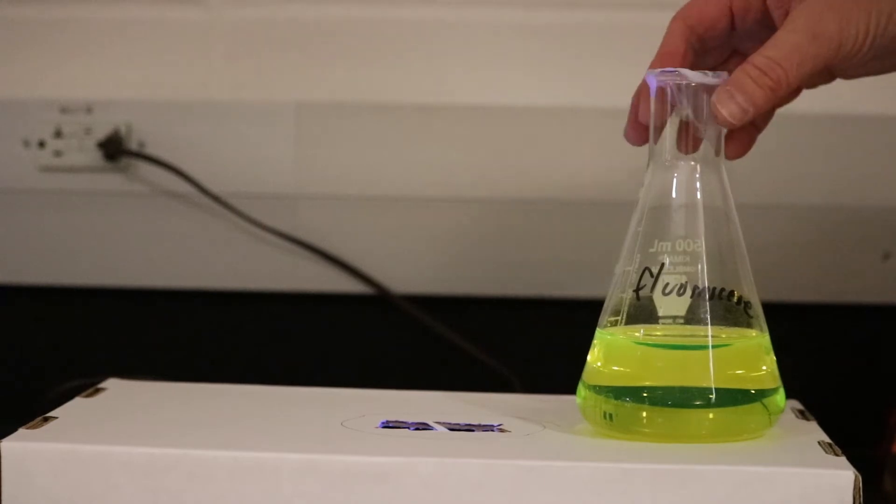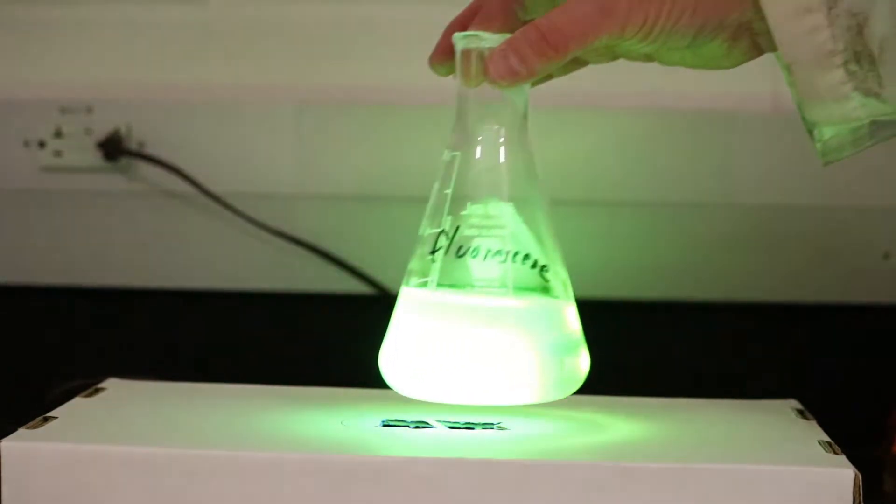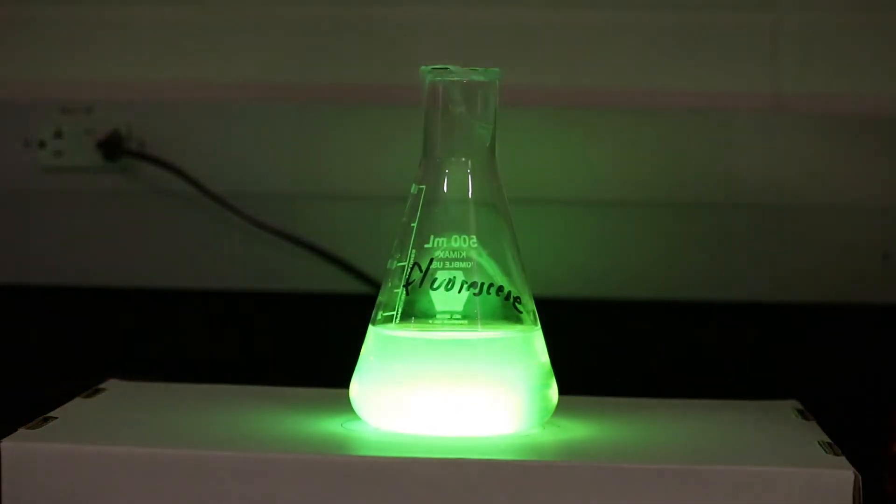We're going to start with fluorescein. Fluorescein as you can see is sort of a yellowish color, but when we expose it to ultraviolet light it gives us this nice bright green color.